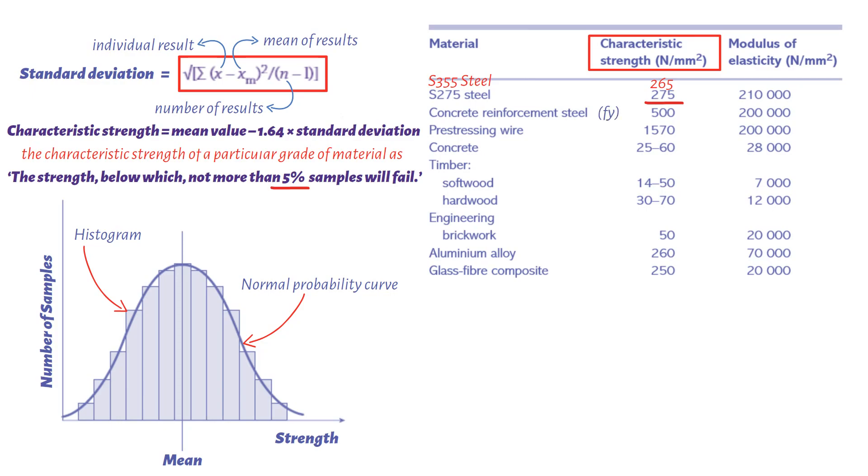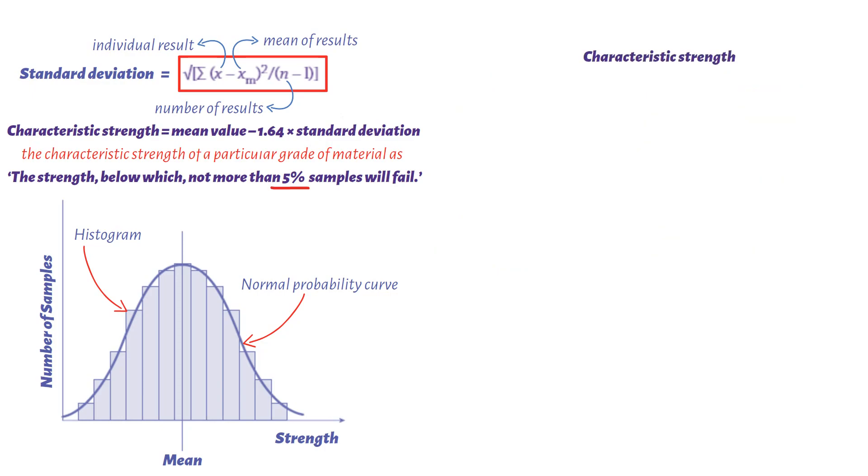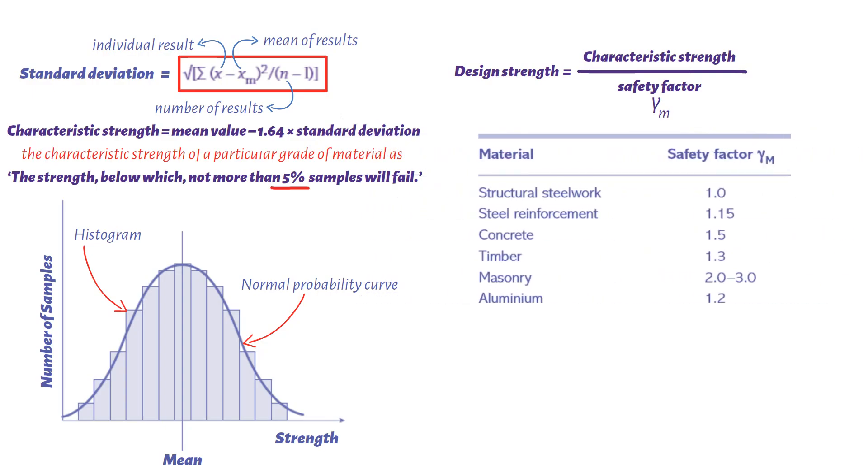In limit state design, the characteristic strength of the various structural materials must be divided by a safety factor before it can be used in design calculations. This is known as a partial safety factor because other safety factors are applied to the loads on the structure. The size of the load factor depends upon the consistency, reliability, and state of knowledge concerning the material. The following table indicates typical values of safety factor.